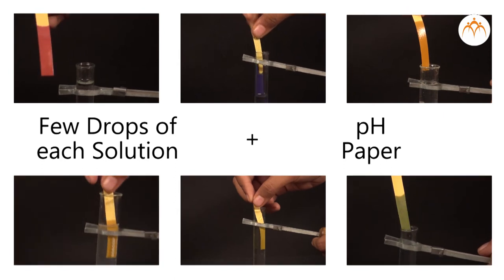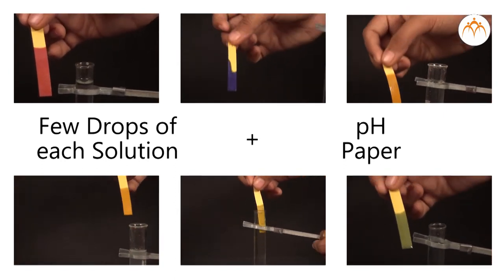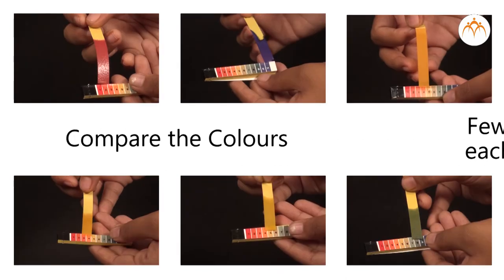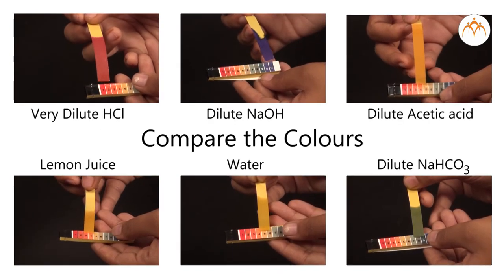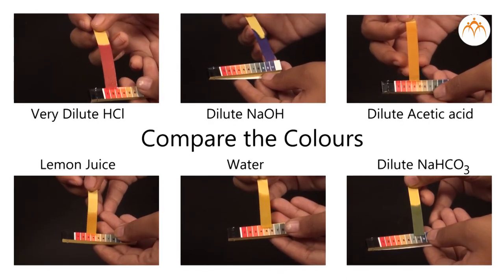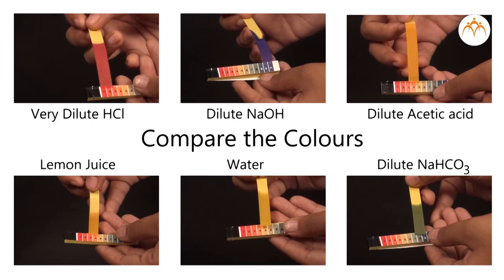We place one or two drops of a solution from the first test tube on the pH paper with help of a dropper. Then we compare the color produced on pH paper with the colors in the chart on the pH paper packet.